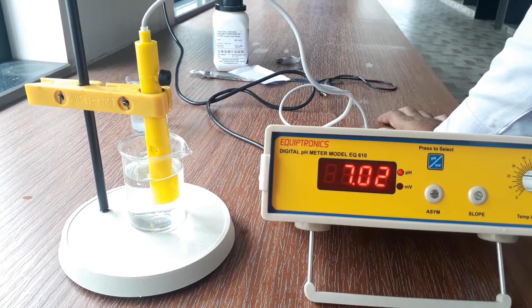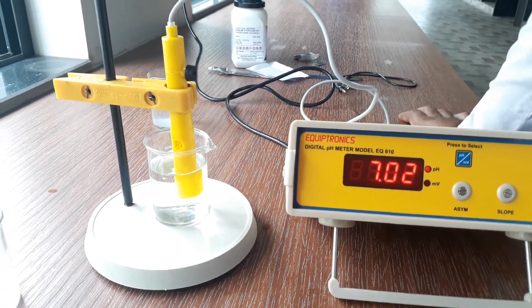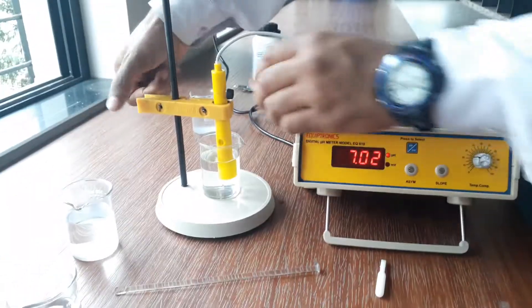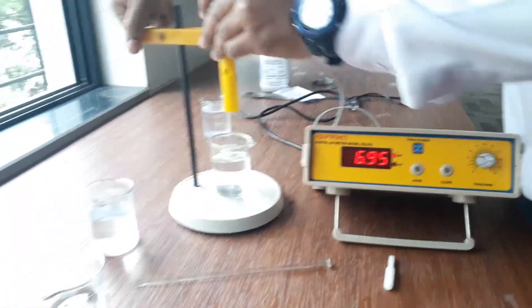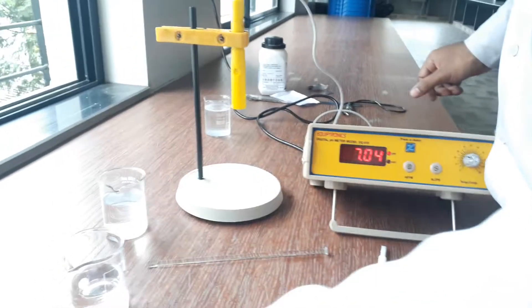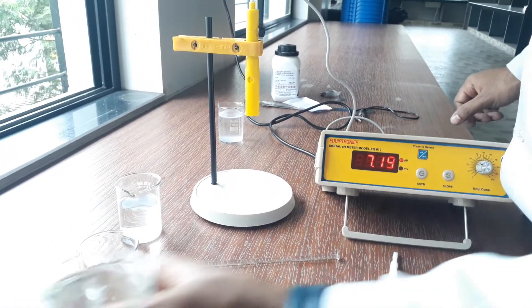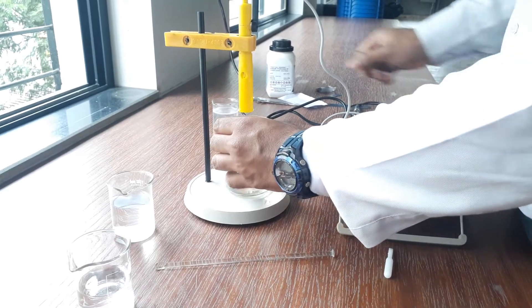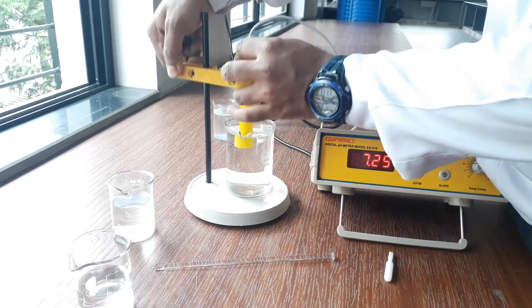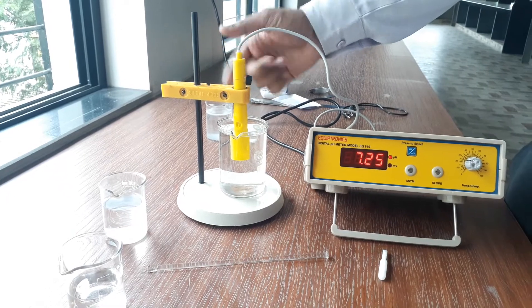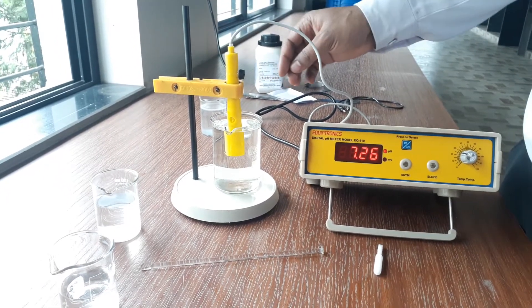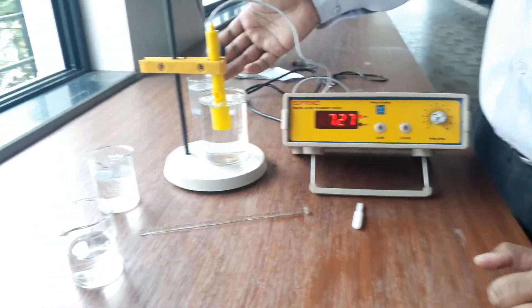Now we will take another solution, that is HCl. So here first we will dip this solution. Whenever we are taking another test, we have to wash this glass rod or you can say sensor, so that whatever liquid is there on the surface of that sensor will be cleared.